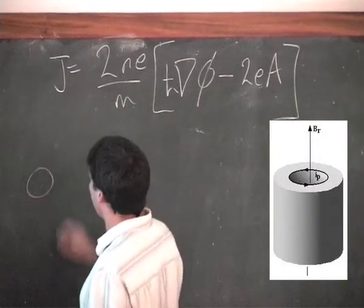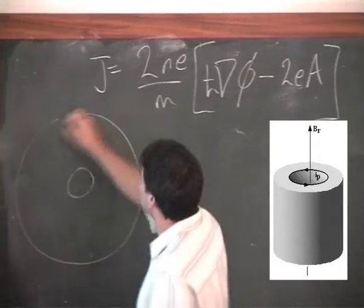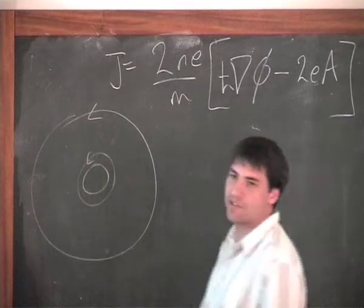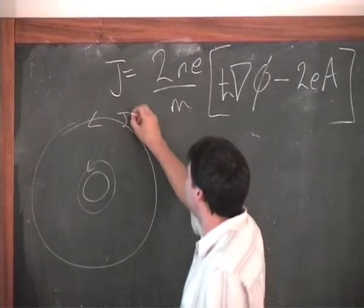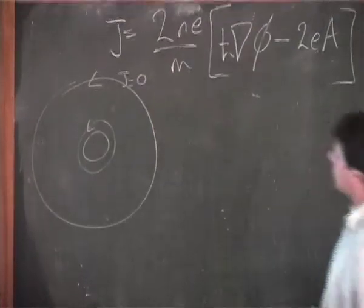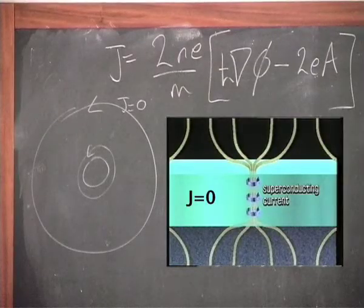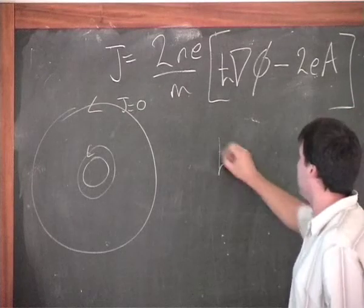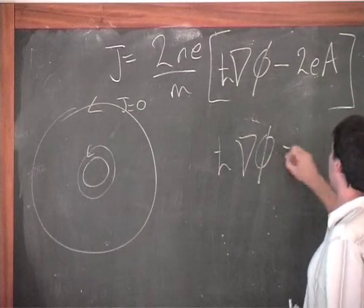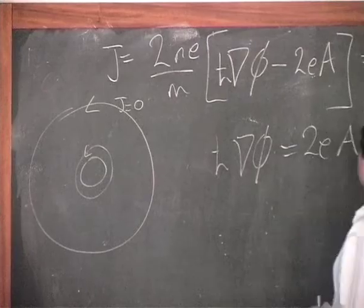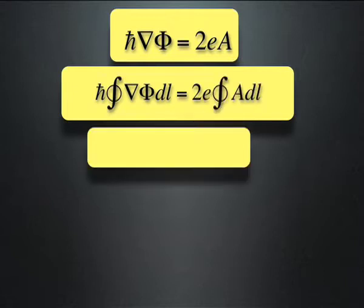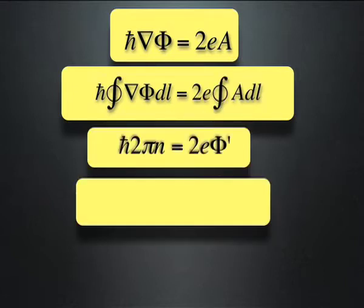In a superconductor with a hole, we do this integral well away from any shielding currents that might be flowing around the hole, at a point where J equals zero. Because the order parameter must be single-valued, this integral has to equal zero, so h-bar times the gradient of phi has got to equal 2e times A. The flux in that loop is therefore equal to h-bar times 2-pi times N over 2e.